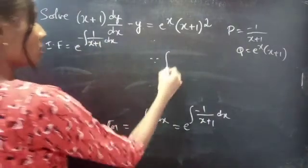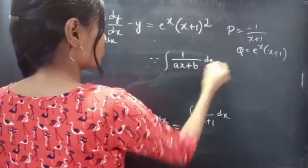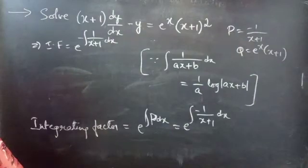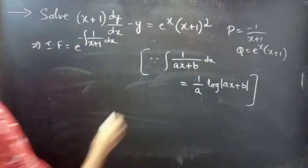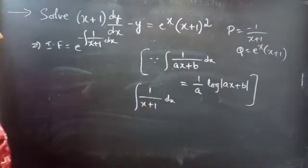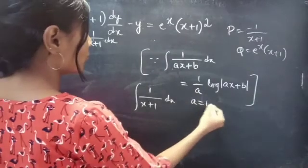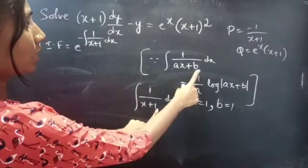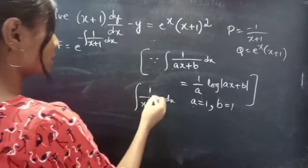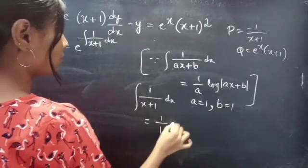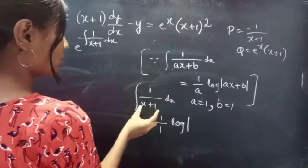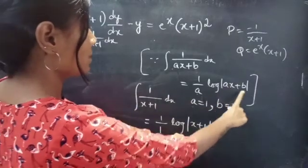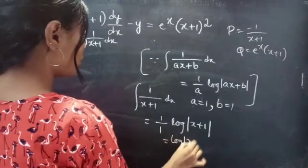We know that ∫ 1/(ax + b) dx = (1/a) log|ax + b|. Now compare ∫ 1/(x + 1) dx with this. For a = 1 and b = 1 — the coefficient of x is 1 — we get ∫ 1/(x + 1) dx = log|x + 1|. So the integrating factor becomes e^(−log|x + 1|).